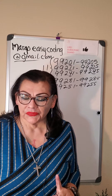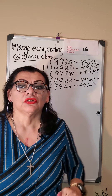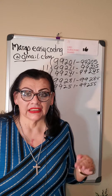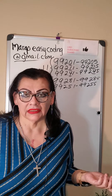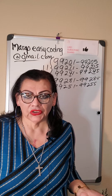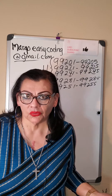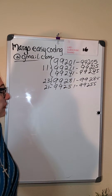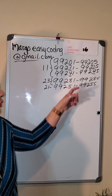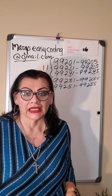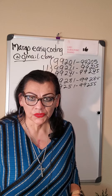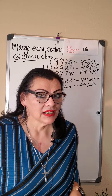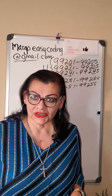Remember, start getting used to the idea that everything gets translated into codes: the services, the procedures, the place of service as well. And then we have learned that 99281 to 99285 is for the emergency room, and the place of service for the emergency room is 23, emergency.